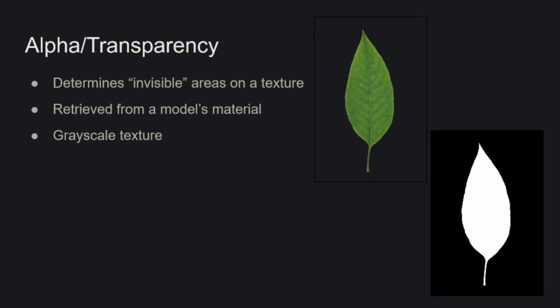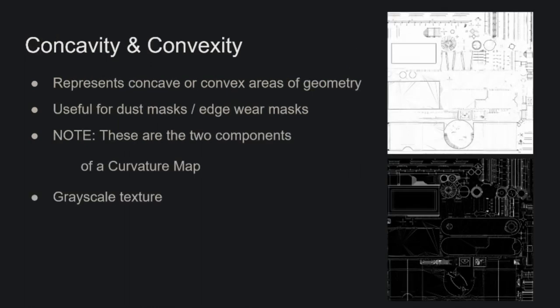The next texture we're able to bake is going to be alpha transparency. This helps us determine areas that should be considered invisible on our materials or our texture, and it's going to be retrieved from the model's material like our ID map was. On our high poly, we can denote areas as being black or white, and that's going to translate over into being transparent or opaque. The next two textures represent concave or convex areas of geometry — and these are actually the two individual components that, when we bake a curvature map, are automatically put together.